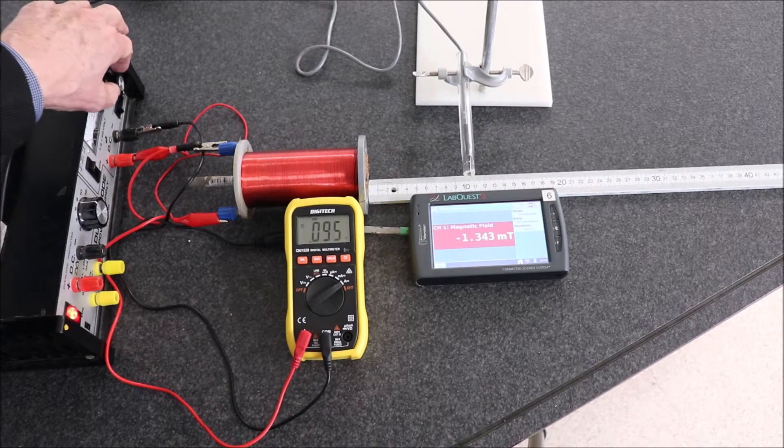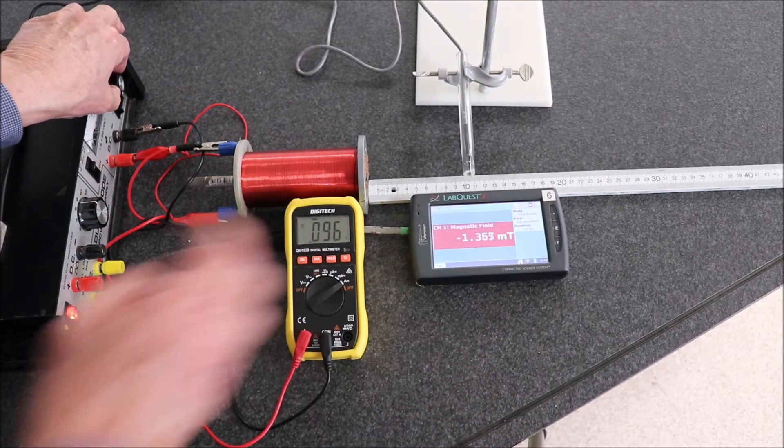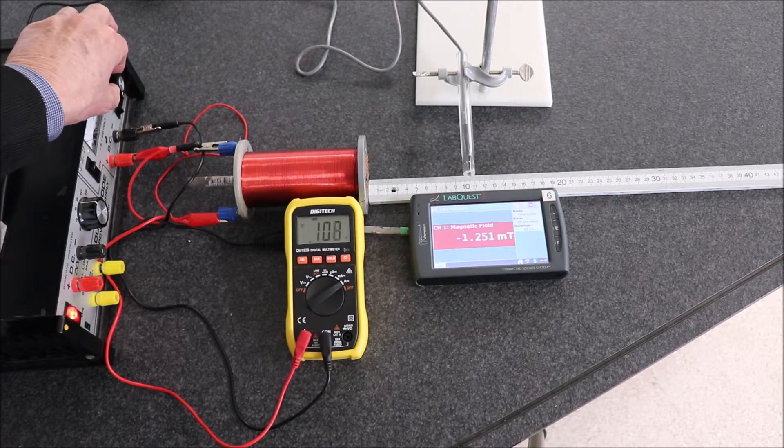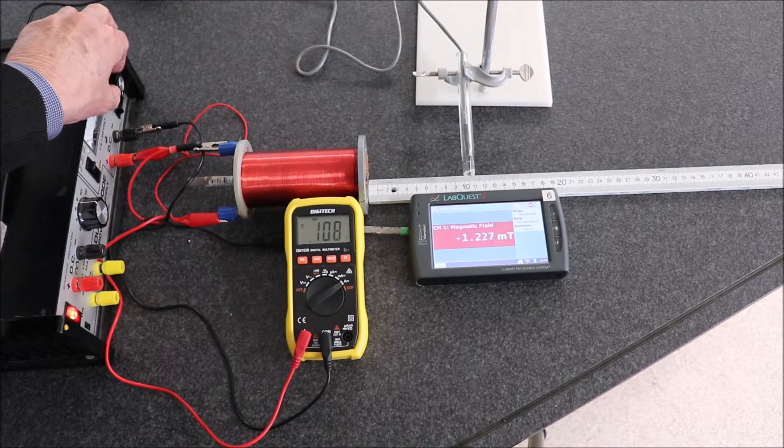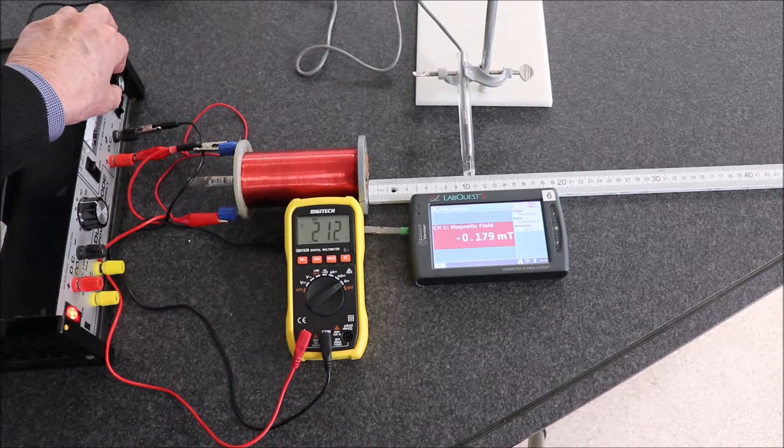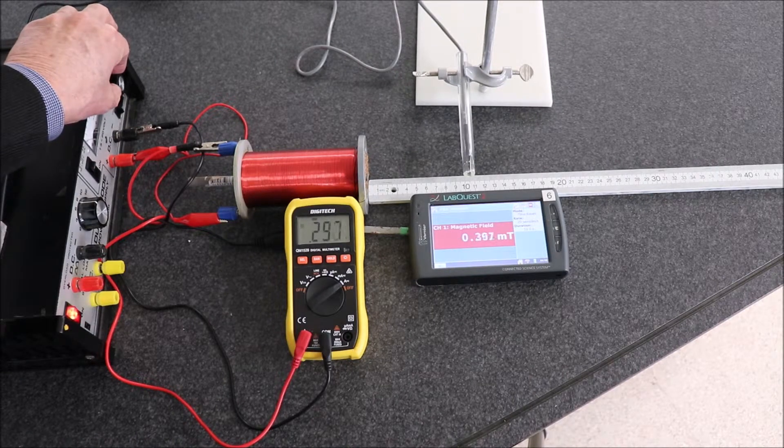At the moment it's about nearly 0.1 of an amp. Now as we increase the current you can see the field strength is getting larger, so we're up to about 0.2, it reads negative 0.184 something like that.